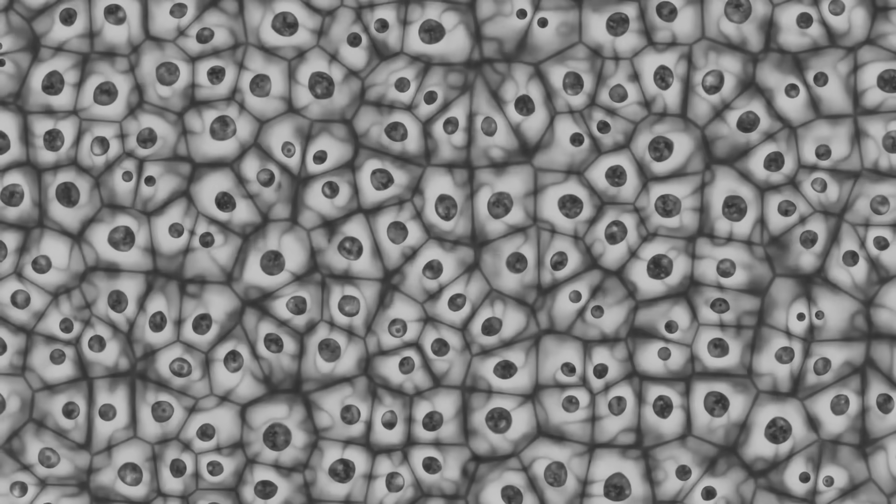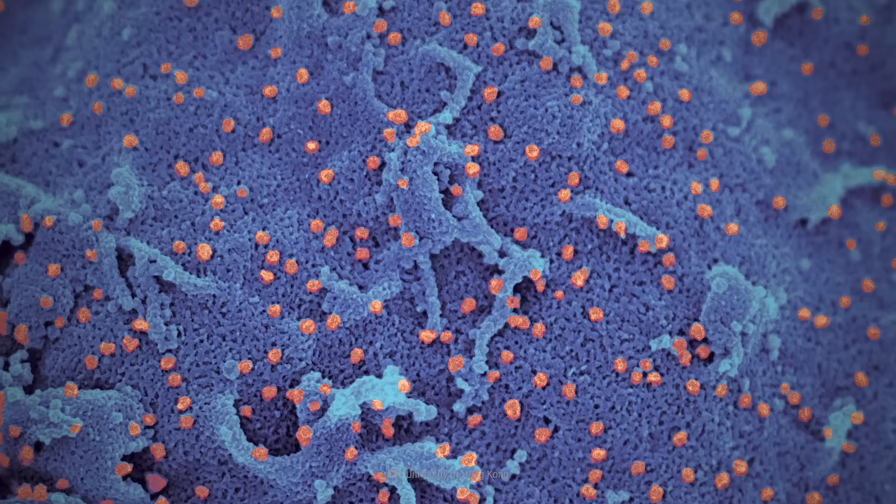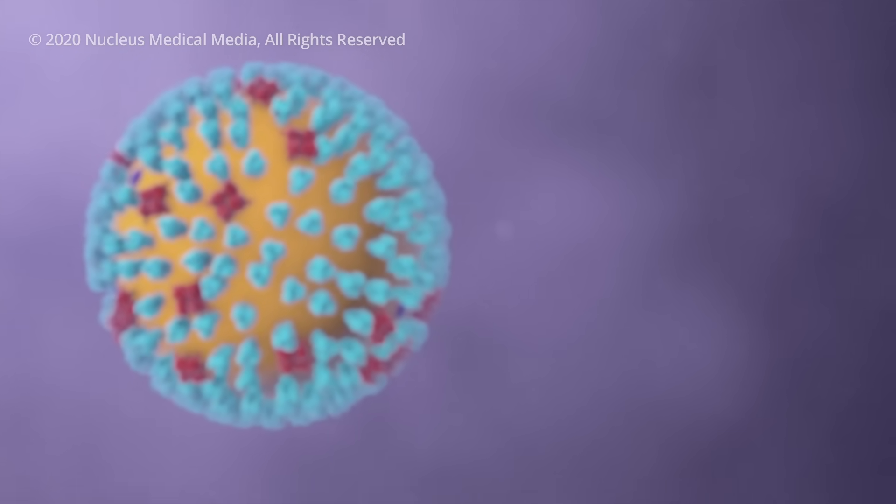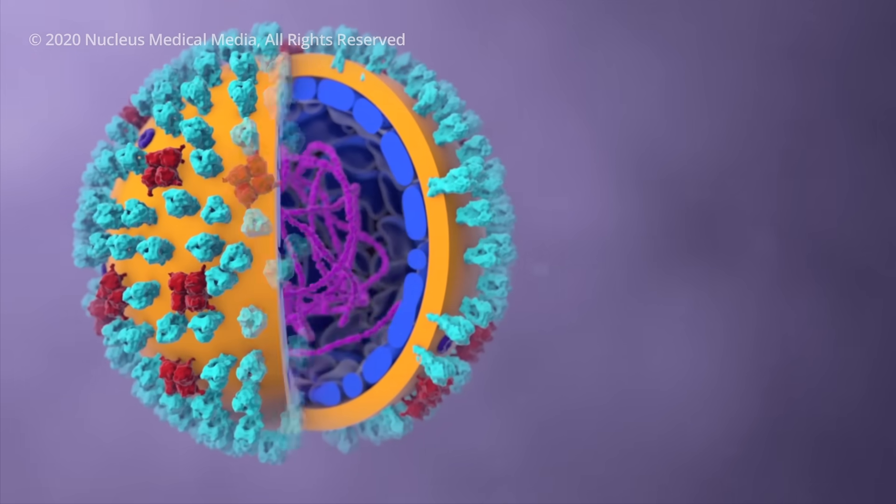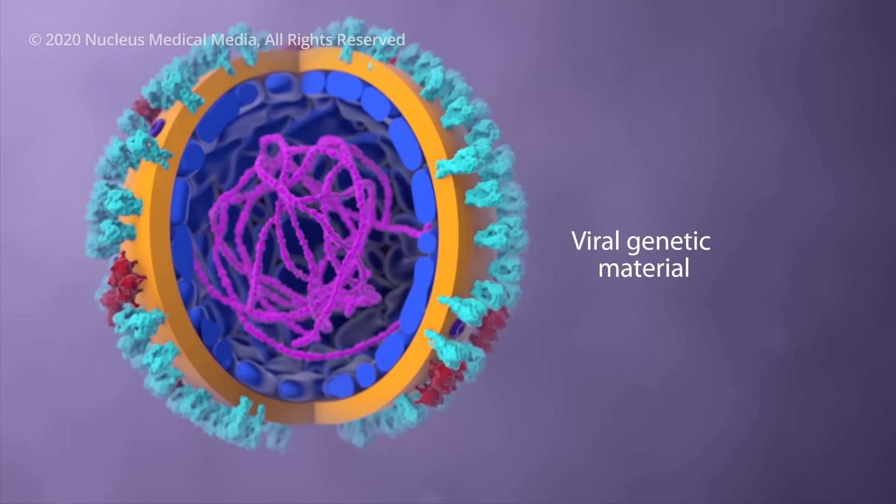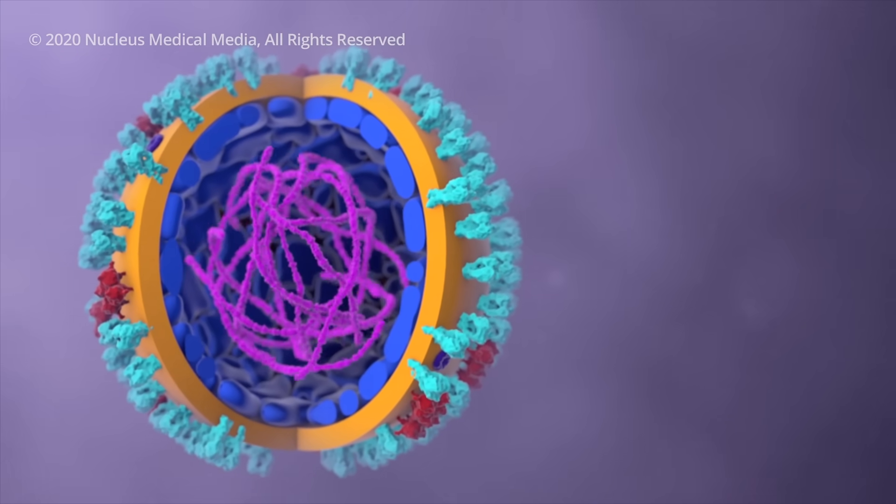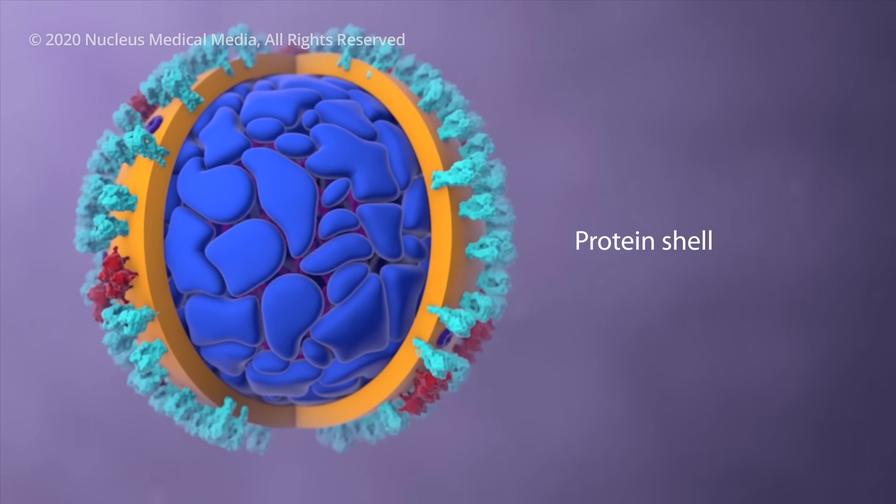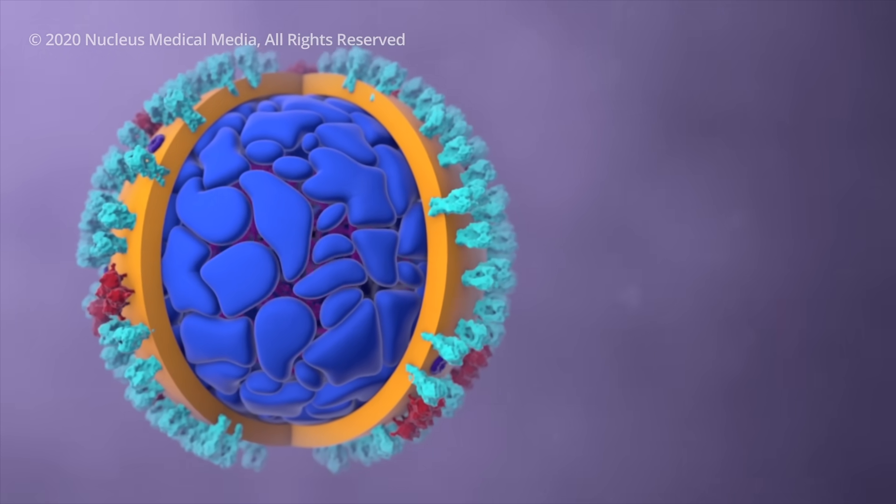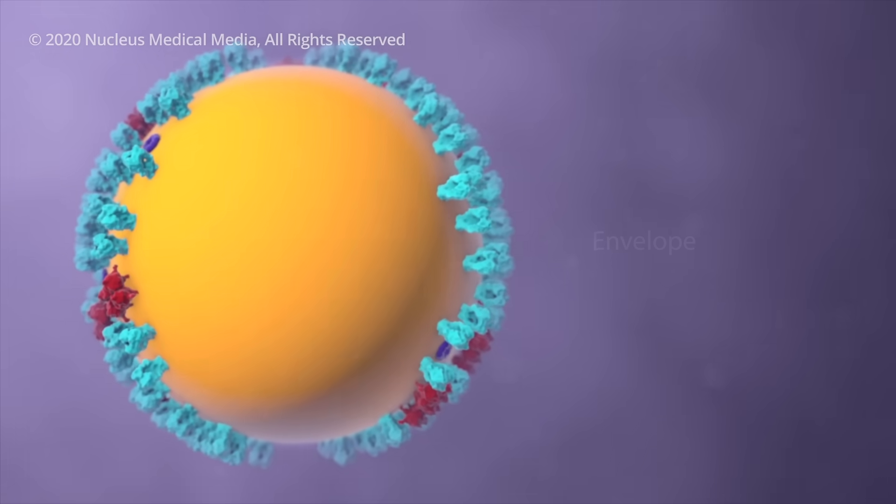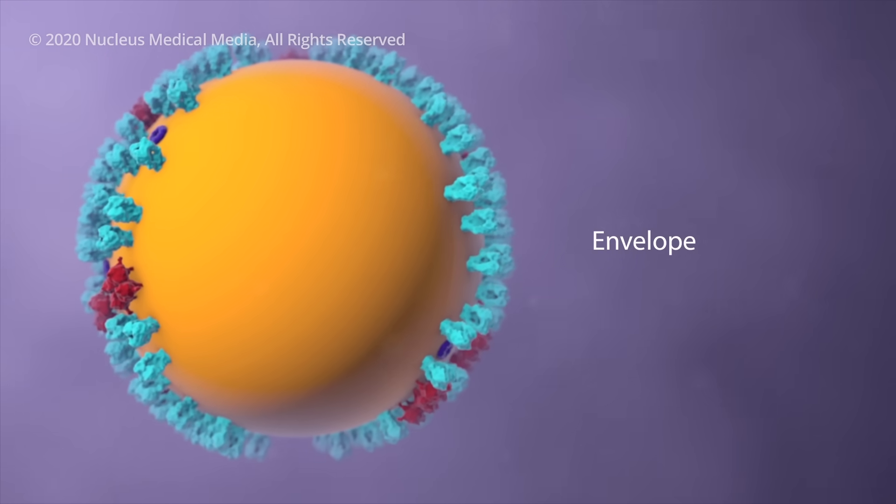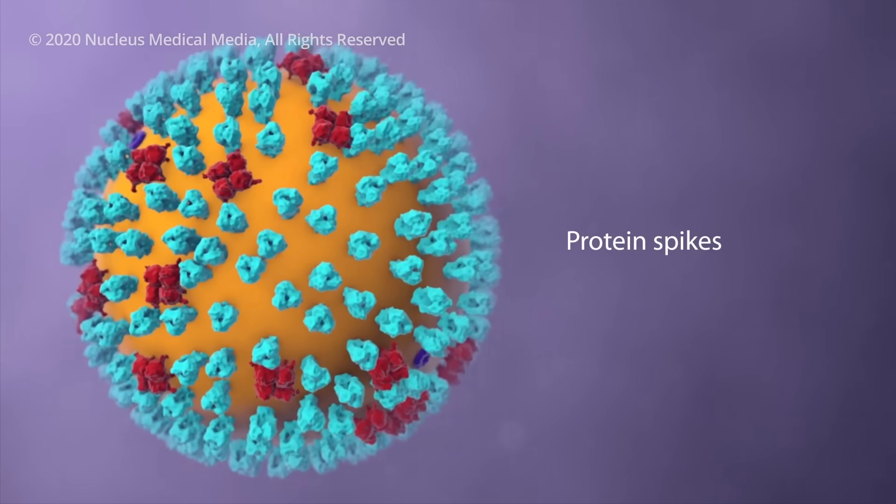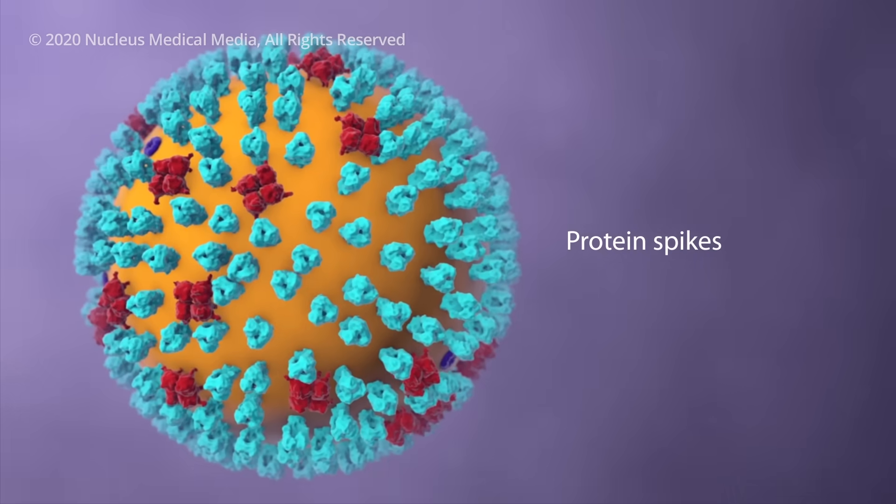The coronavirus must infect living cells in order to reproduce. Let's have a closer look. Inside the virus, genetic material contains the information to make more copies of itself. A protein shell provides a hard protective enclosure for the genetic material as the virus travels between the people it infects. An outer envelope allows the virus to infect cells by merging with the cell's outer membrane. Projecting from the envelope are spikes of protein molecules.